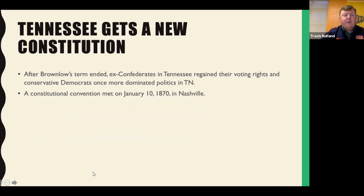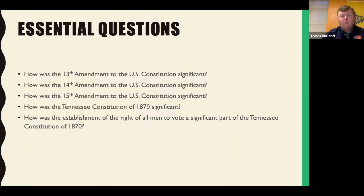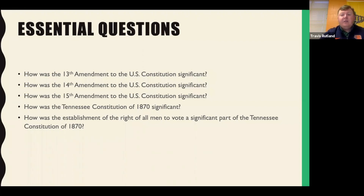To review our essential questions: The 13th Amendment abolished slavery. The 14th Amendment gave people born in the United States citizenship. The 15th Amendment allowed all men to vote, regardless of race or previous condition of servitude — though not women. The Tennessee Constitution of 1870 outlawed slavery and gave African-American men the right to vote, but it did create a poll tax. That poll tax, while the Constitution gave all men the right to vote regardless of color or previous servitude, effectively kept many African-American men from voting.